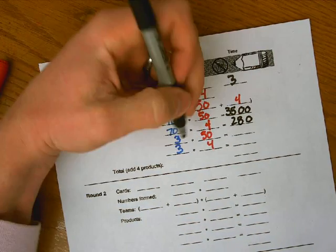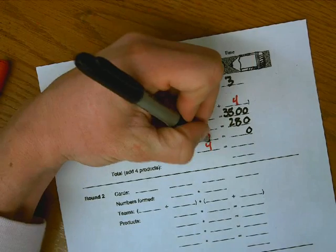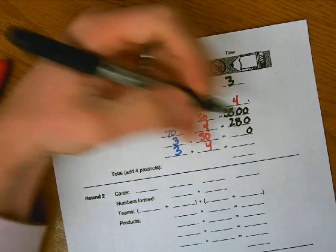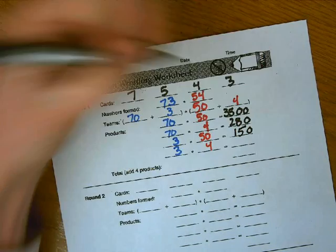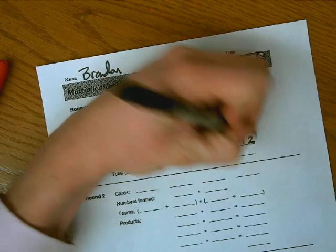The next product is going to be three times 50, so I see a zero here in the ones place. We'll put a zero. Three times five is 15. Last one, three times four is 12, and I now have my products.